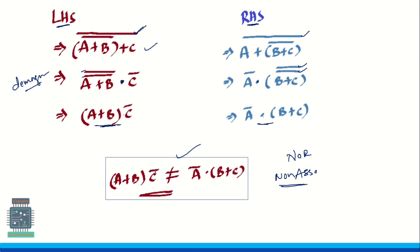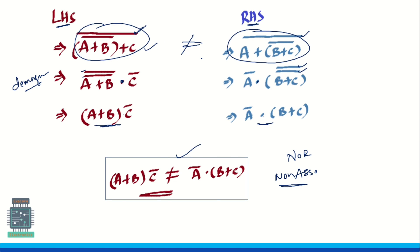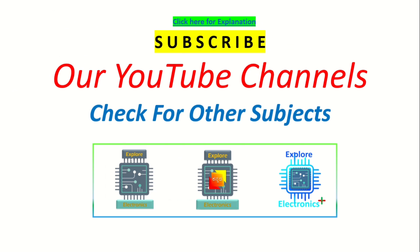This is how we can prove these two expressions are not equal. We can directly write this expression and show they are not the same. This is the answer for the non-associativity demonstration of NOR gate.